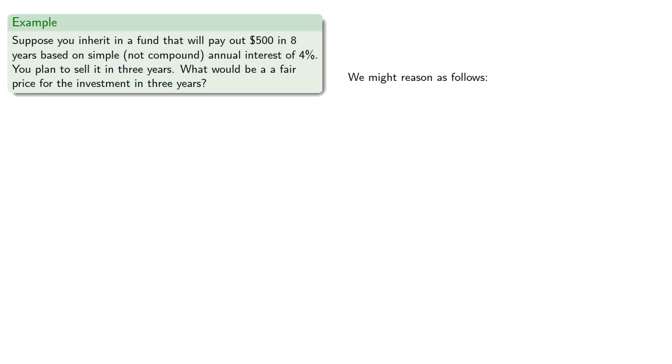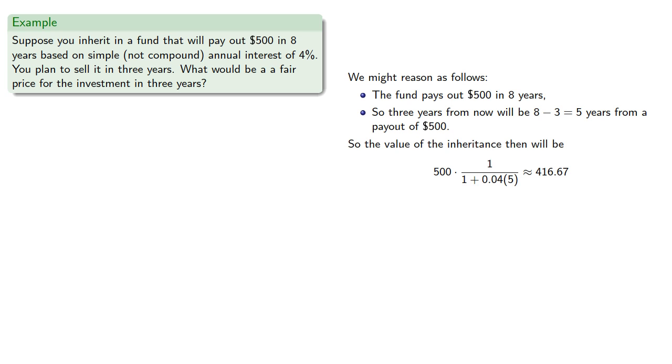Well, we might reason as follows. The fund pays out $500 in eight years, so three years from now will be five years from a payout of $500. So the value of the inheritance then will be the present value of $500 paid out in five years.